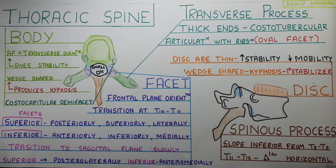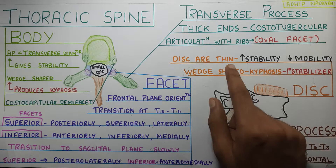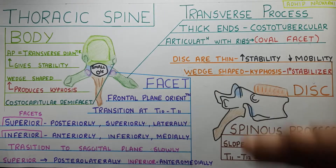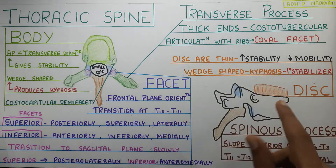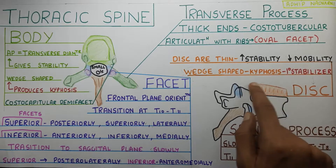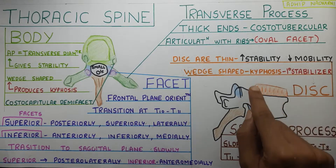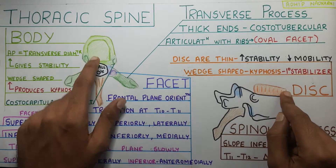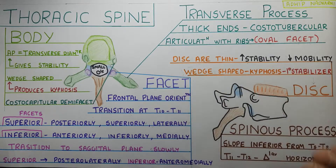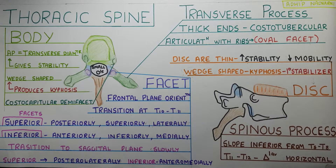The last part is the disc. The disc in the thoracic region is very thin, which helps provide stability. The thinner the disc, the less movement there is — reduced mobility and increased stability — making it act as a primary stabilizer. The disc is also wedge-shaped, same as the vertebral body, and this wedge shape again helps increase the kyphosis seen in the thoracic region.